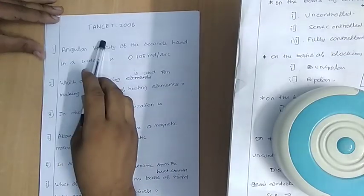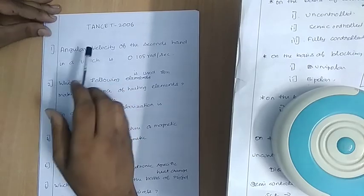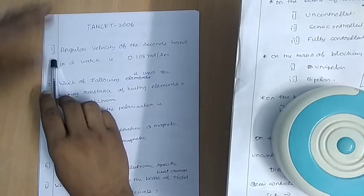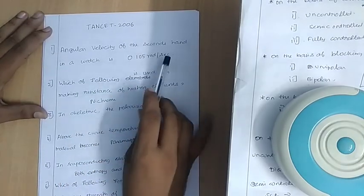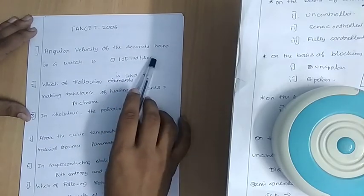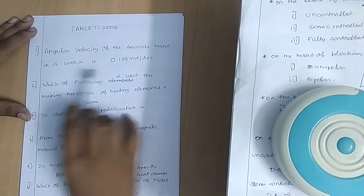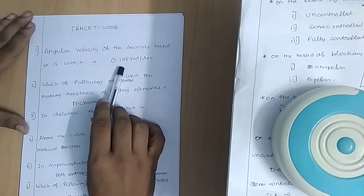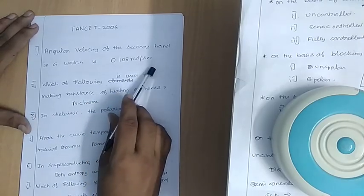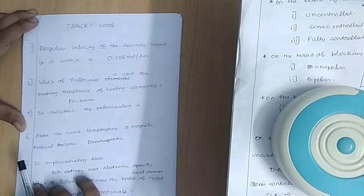This is Tanset 2006. First question: angular velocity of the second hand in radians per second is 0.105 radians per second. Next question: which of the following is used for making resistance of heating elements?